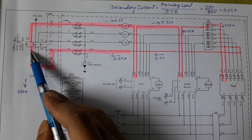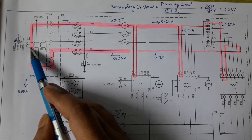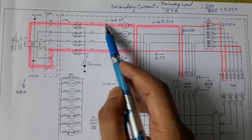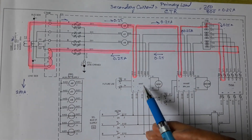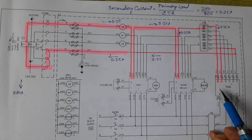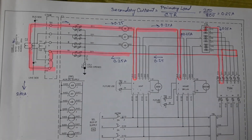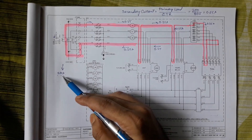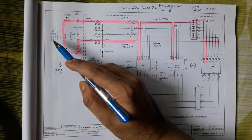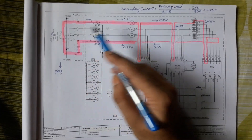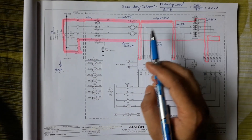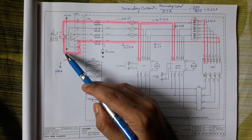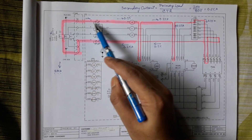For simplicity, we will discuss only the red phase CT. Notice that the red phase CT is connected with 1 ammeter, 1 megawatt meter, 1 megavar meter, and 1 trivector meter or energy meter. Suppose the load current of the CT primary is 200 ampere. As the CT ratio is 800 by 1, the secondary current will be 0.25 ampere, and this 0.25 ampere will follow the shaded path.